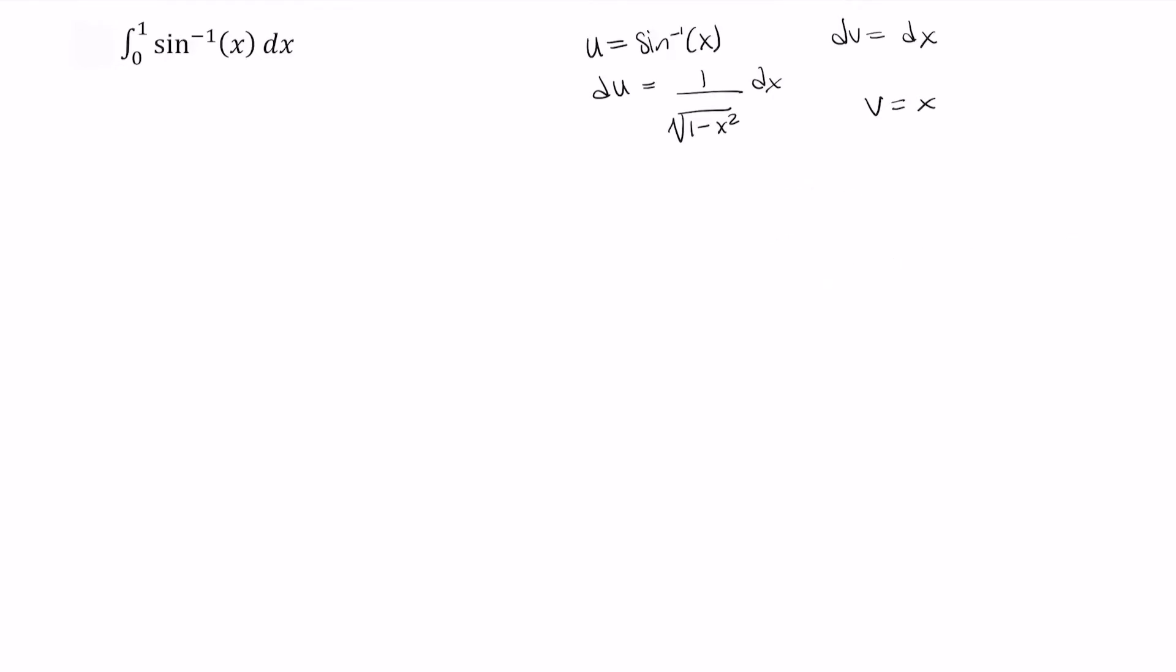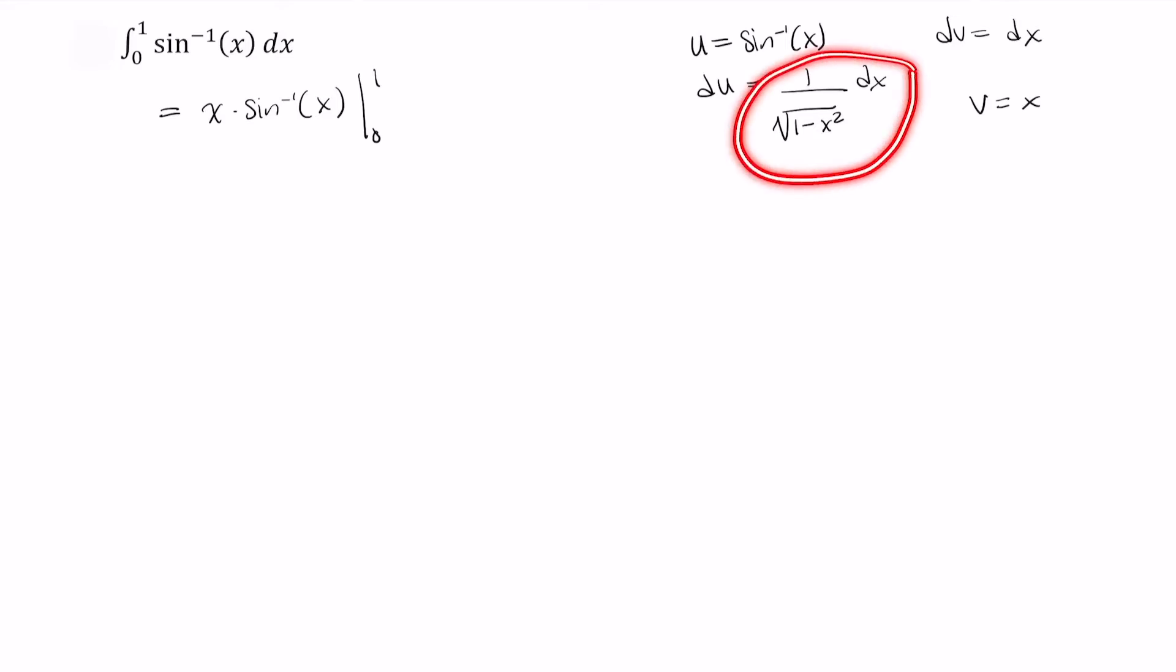Okay, so now we can use parts to rewrite this. We have sine inverse of x and we're going to multiply that by x. And this is evaluated from 0 to 1. And then from that, we're going to subtract the integral of x over the square root of 1 minus x squared dx. And this is still from 0 to 1.